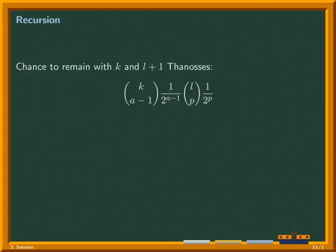This means that we can split the system in a part dependent on the active and on the passive Thanoses. Remember the formula from earlier? We can use the fact that the expected value equals the sum of each of the chances times the expected value of each corresponding system.